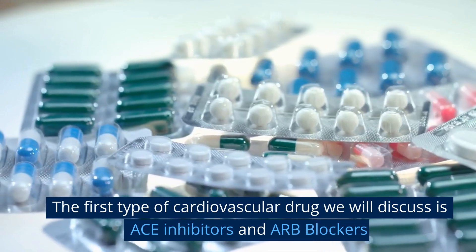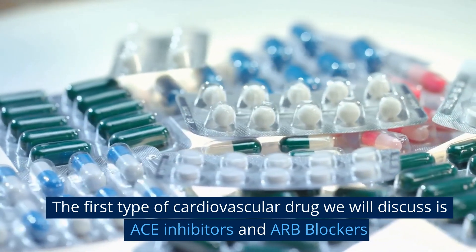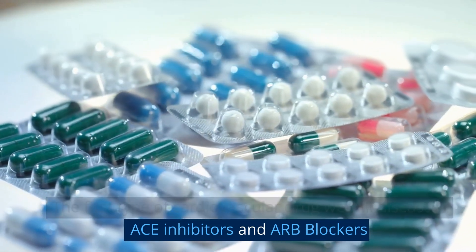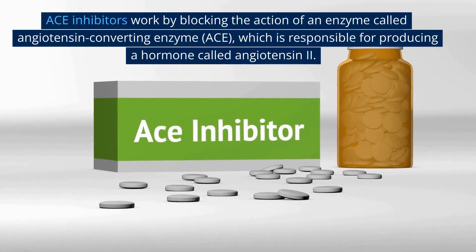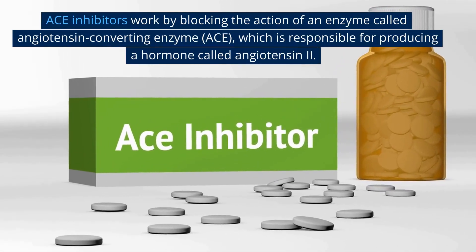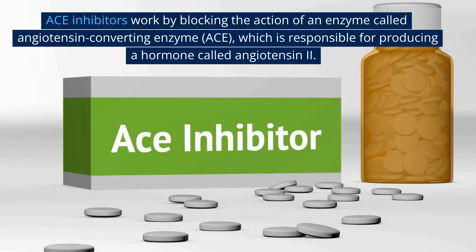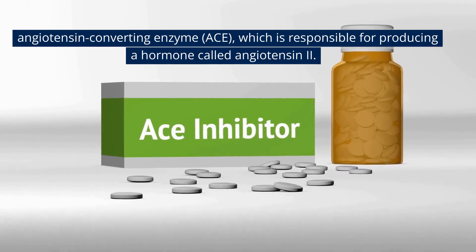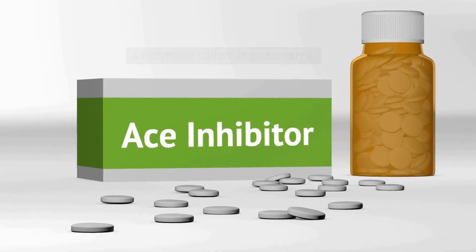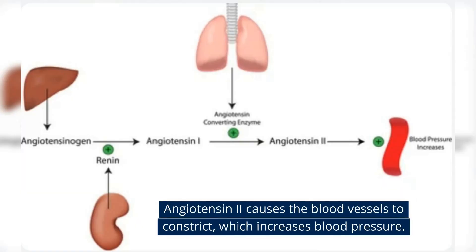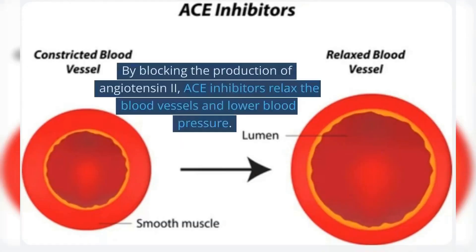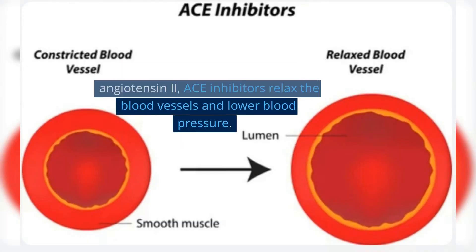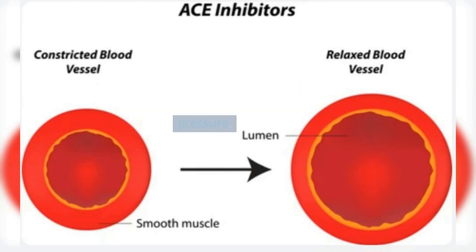The first type of cardiovascular drug we will discuss is ACE inhibitors and ARB blockers. ACE inhibitors work by blocking the action of an enzyme called angiotensin-converting enzyme (ACE), which is responsible for producing a hormone called angiotensin-2. Angiotensin-2 causes the blood vessels to constrict, which increases blood pressure. By blocking the production of angiotensin-2, ACE inhibitors relax the blood vessels and lower blood pressure.